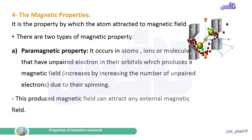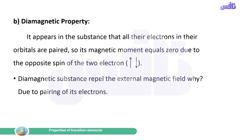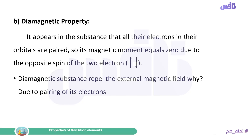The produced magnetic field in paramagnetic substances can attract any external magnetic field. Diamagnetic property appears in substances where all electrons in their orbitals are paired, so the magnetic moment equals zero. This is due to the opposite spin of two paired electrons — one moves in one direction and the other in the opposite direction — producing no net magnetic moment. Diamagnetic substances are repelled by the external magnetic field.